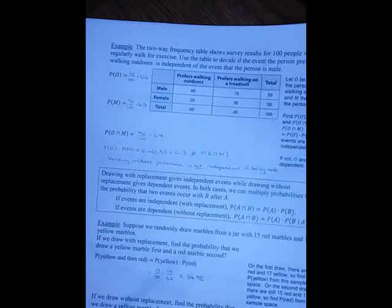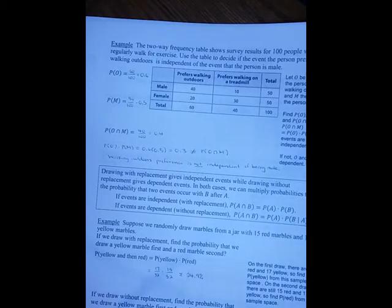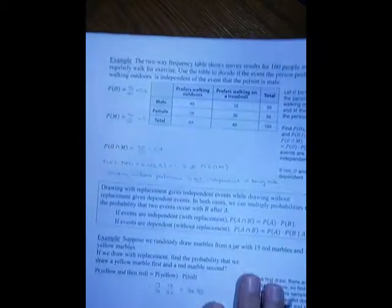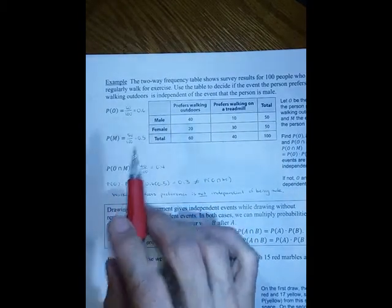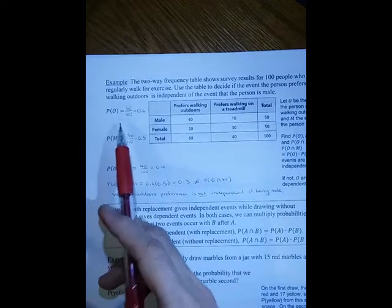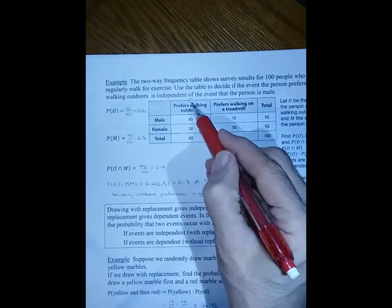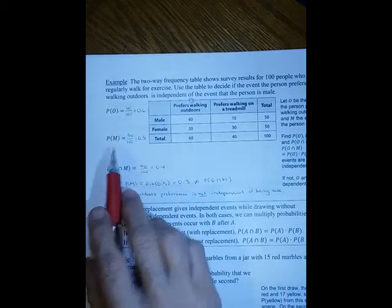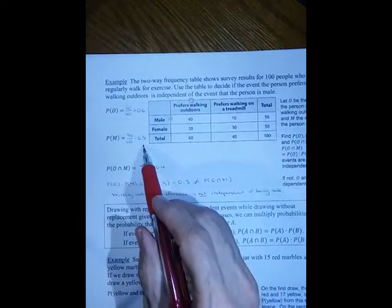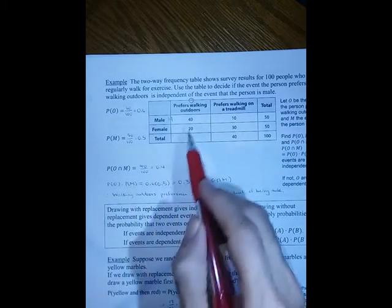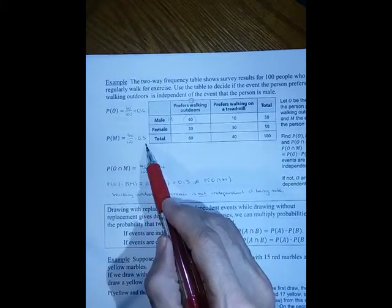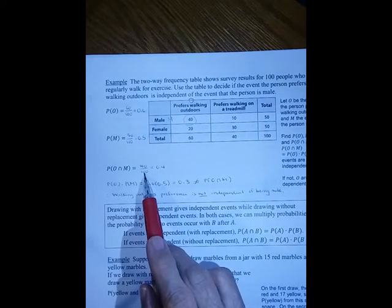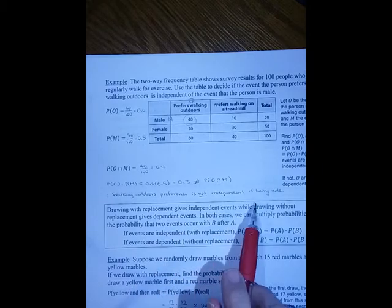In another example, a two-way frequency table shows survey results for 100 people who regularly walk for exercise. We use the table to decide if preferring to walk outdoors (O) is independent of being male (M) by checking the multiplication rule. The probability of preferring outdoors is 60 out of 100, the probability of being male is 50 out of 100 (0.5), and the probability of O and M (the intersection) is 0.4. Multiplying the individual probabilities gives 0.3, which differs from the intersection probability of 0.4, so walking outdoors preference is not independent of being male.